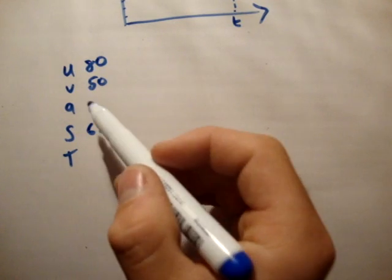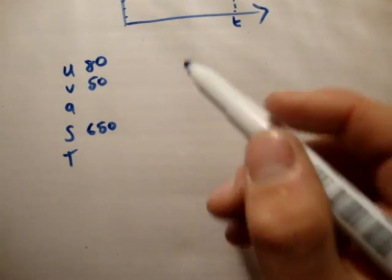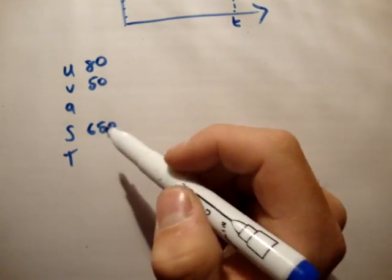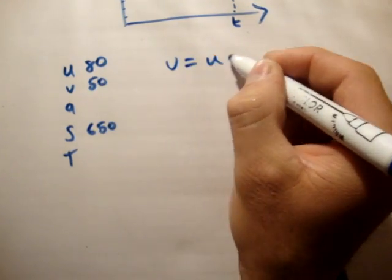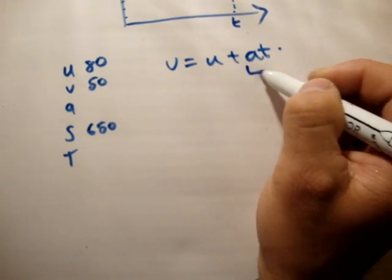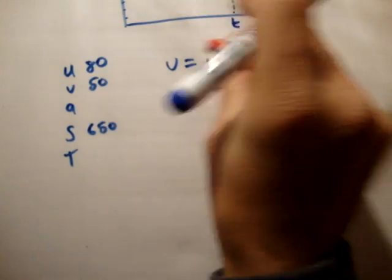So we need to find out both the acceleration and the time. So v equals u plus at. If we use that formula, we have two unknowns, that won't work, just to show you. We have both v and u, but we don't know this here, so that's no good to us.